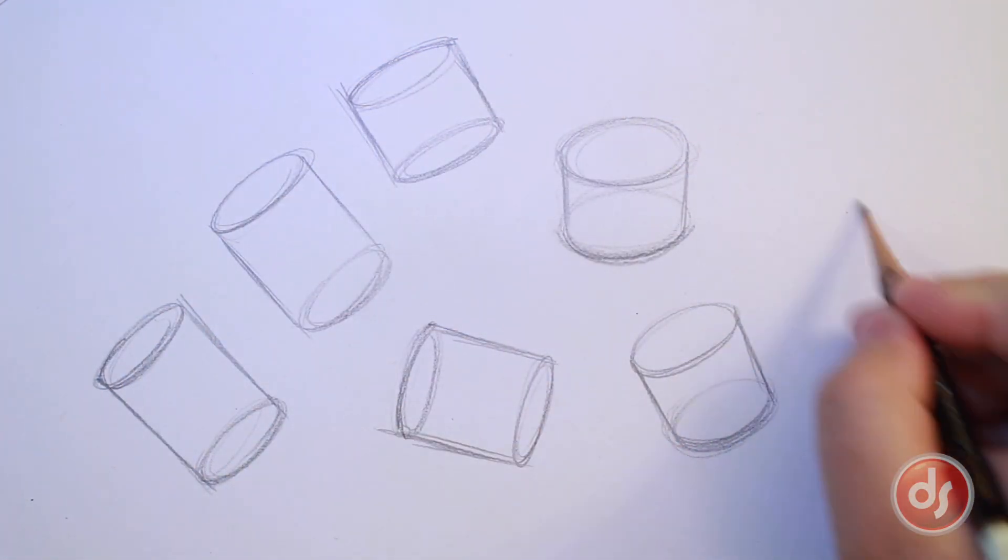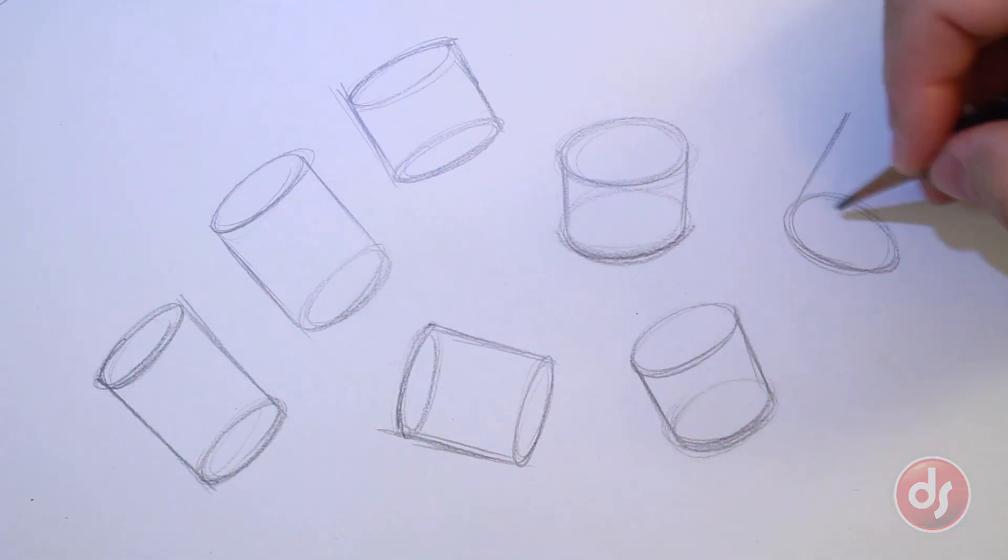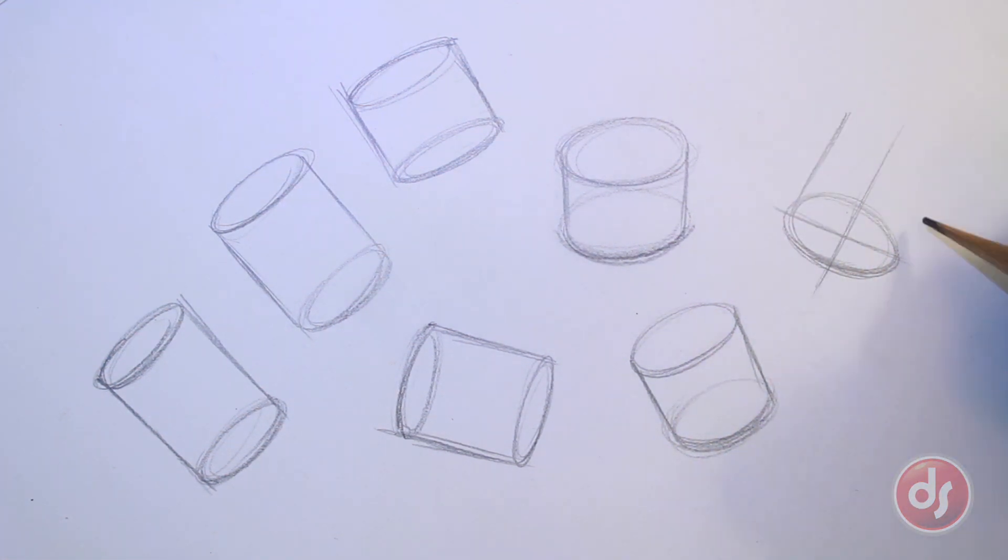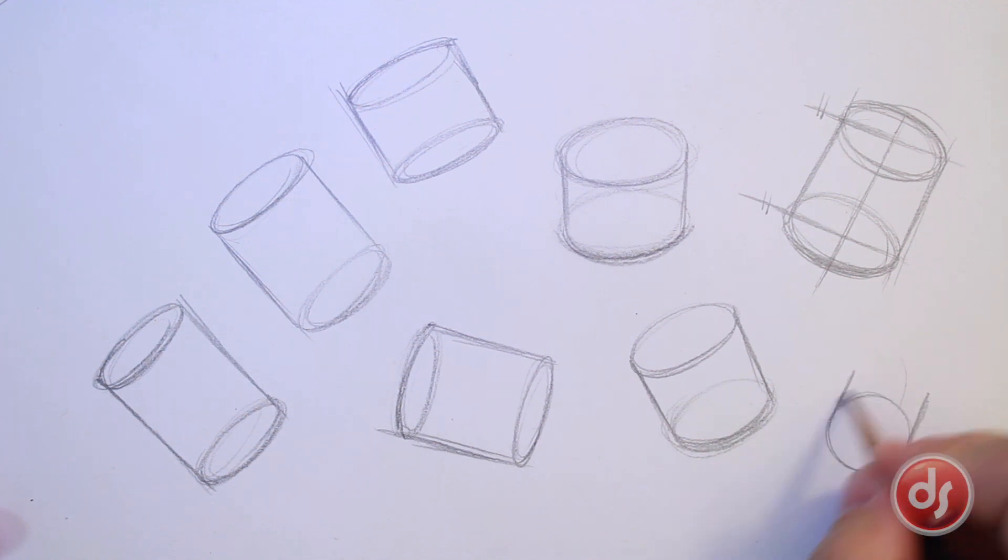If a cylinder looks off, use some construction lines to help you fix it. Find the major and minor axis and make sure they're parallel. And remember those also relate to the X, Y, and Z lines. These will help you keep the cylinder looking solid and correct in space.